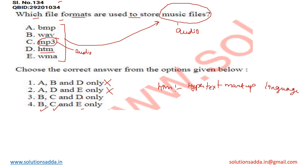Let's understand the other example: WMA. WMA stands for Windows Media Audio, and by its name we understand that this file extension is related to the audio file. So option E is right but option D is not. Therefore, the correct options for this question are B, C, and E — option number four is correct.